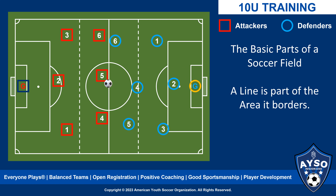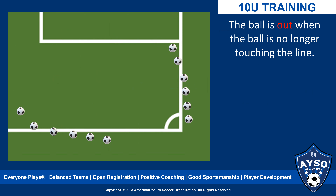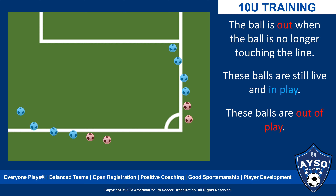This video will cover basic parts of the soccer field. It is important to note that all lines are part of the area they border. The ball is only out of play when the ball has completely crossed and is no longer touching the line. These balls are still live and in play. These balls are out of play.